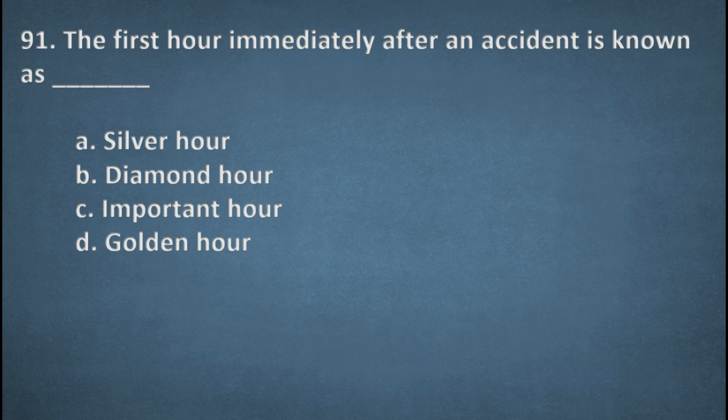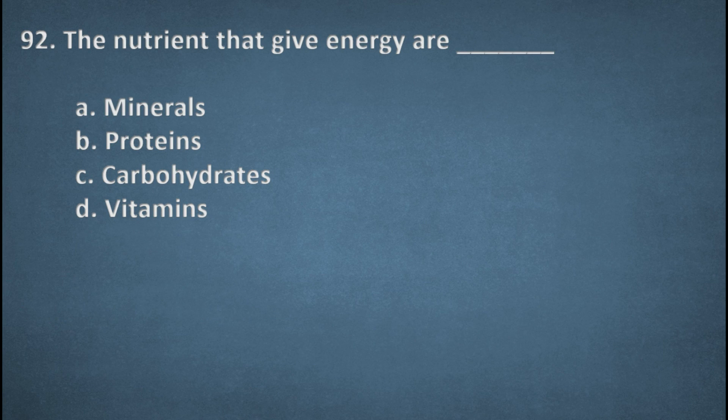Next one. The first hour immediately after an accident is known as options: Silver hour, Diamond hour, Important hour, Golden hour. The right option, D, Golden hour. Next one. The nutrients that give energy are options: Minerals, Proteins, Carbohydrates, Vitamins. The right option, C, Carbohydrates.